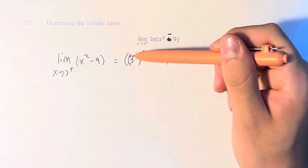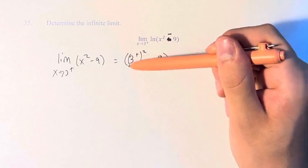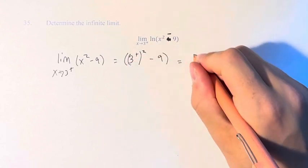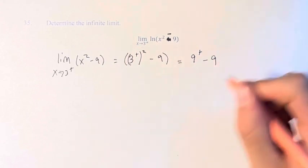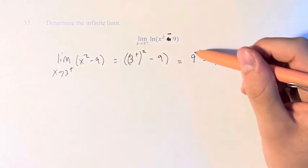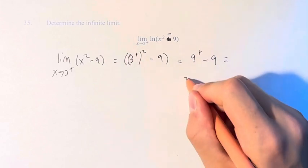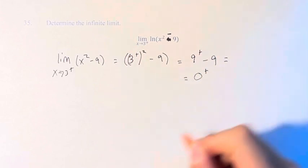So if we're approaching 3 from the right, that means we have values that are slightly greater than 3. So squaring them is going to give us values that are slightly greater than 9. Subtracting 9, taking values that are slightly greater than 9 and subtracting 9 means you're going to get values that are slightly greater than 0.